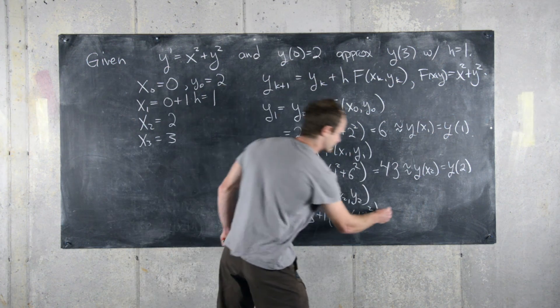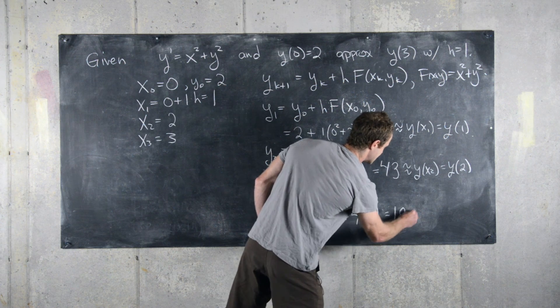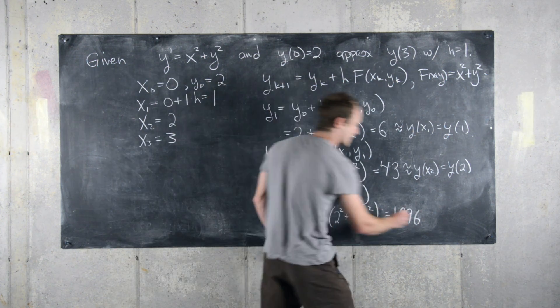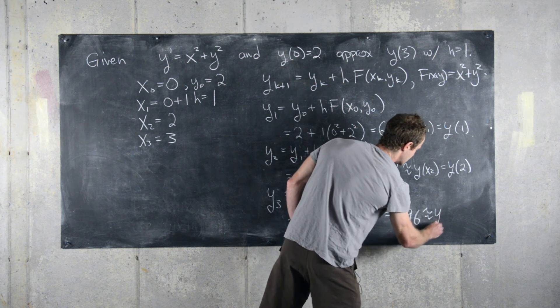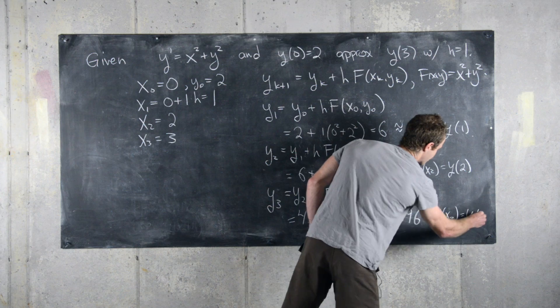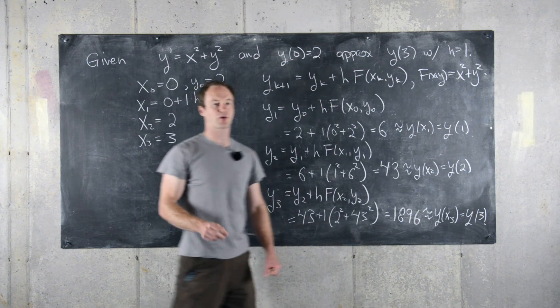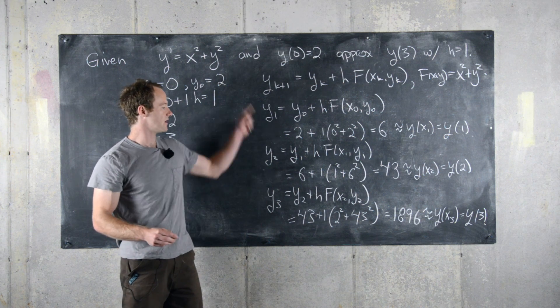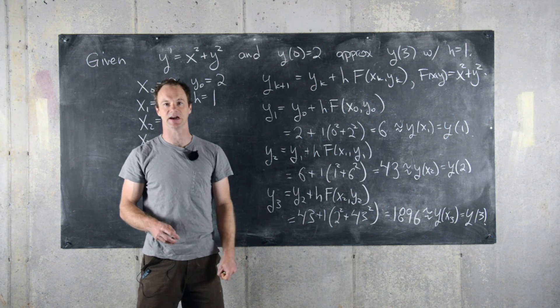And I've worked this out off camera, so this is 1896. So this is approximately equal to y of x three, which is equal to y of three. So we have an approximate value for y of three using Euler's method three times of 1896.